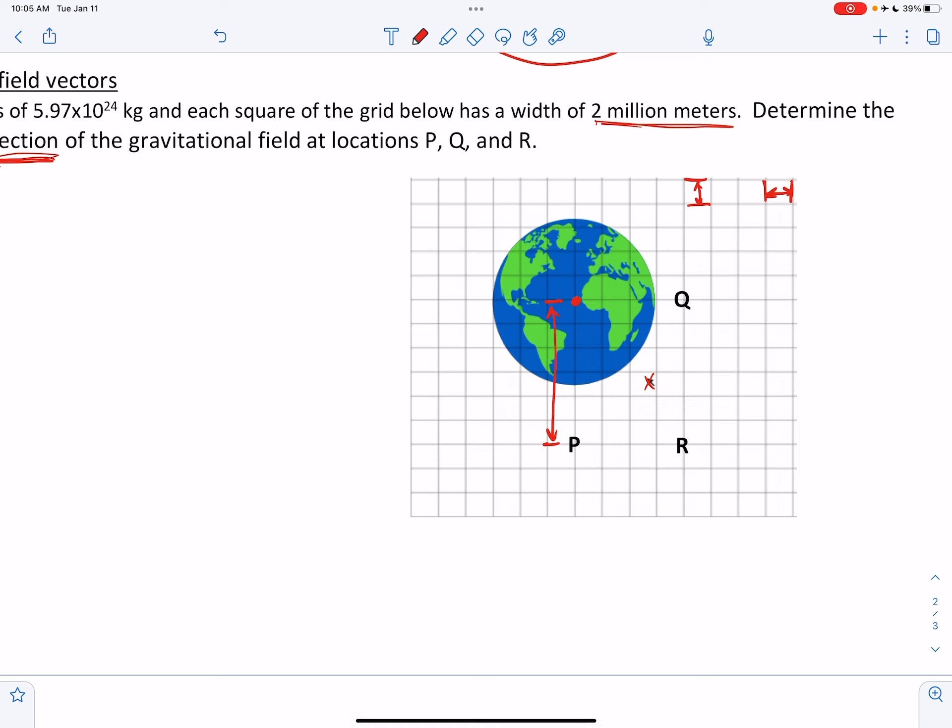Each square is 2 million meters wide. So this is 1, 2, 3, 4, 5, 6 squares. 6 times 2 is 12. So that must be 12 million meters. So we can write that as 12 times 10 to the 6th meters.